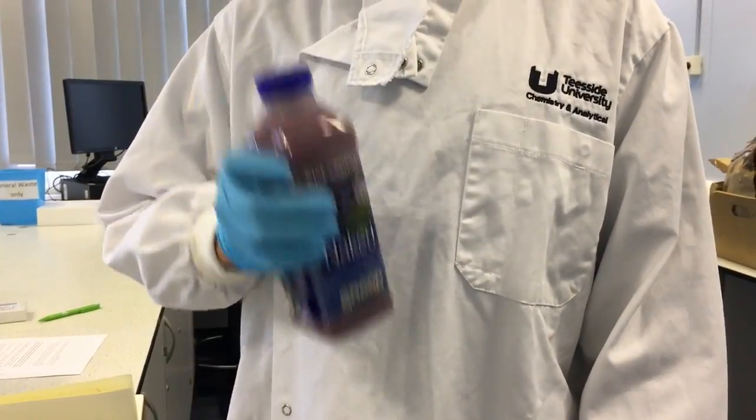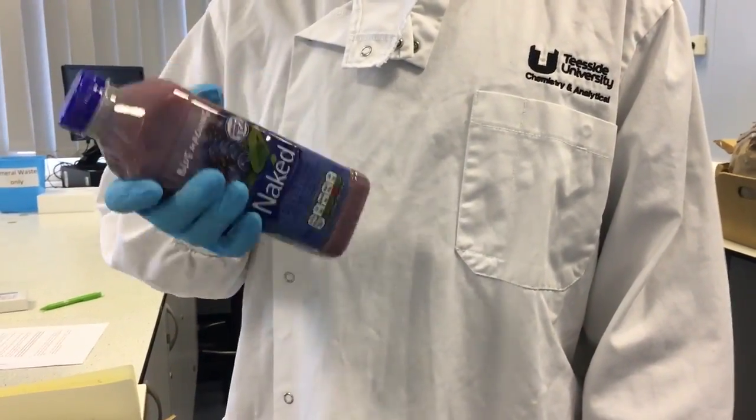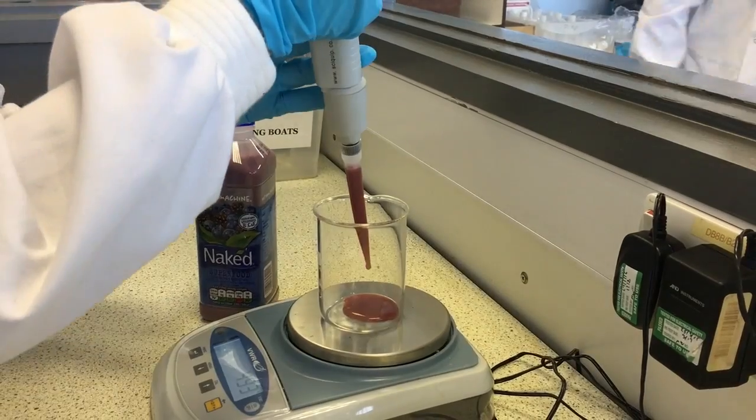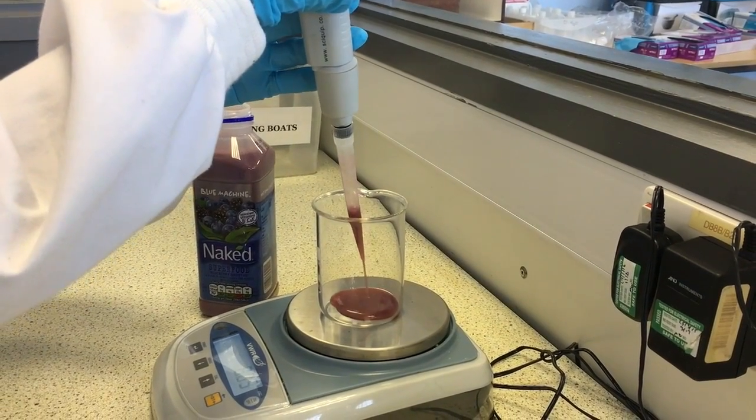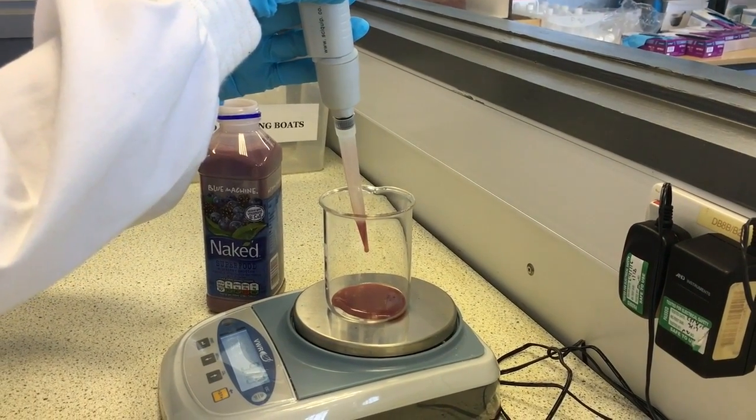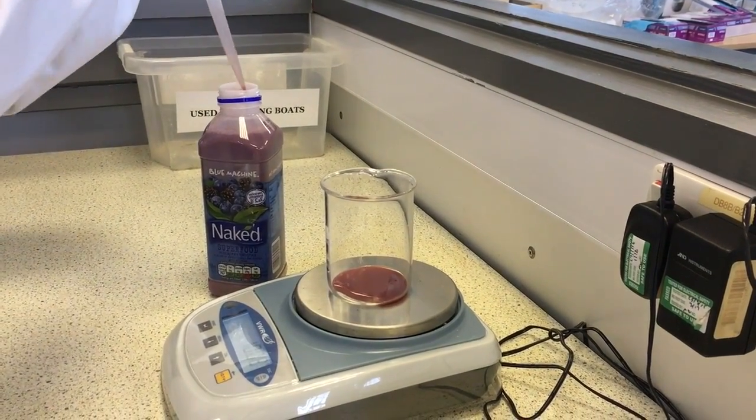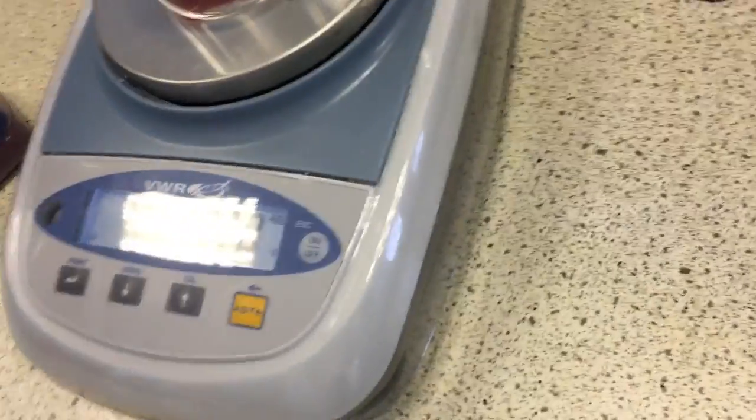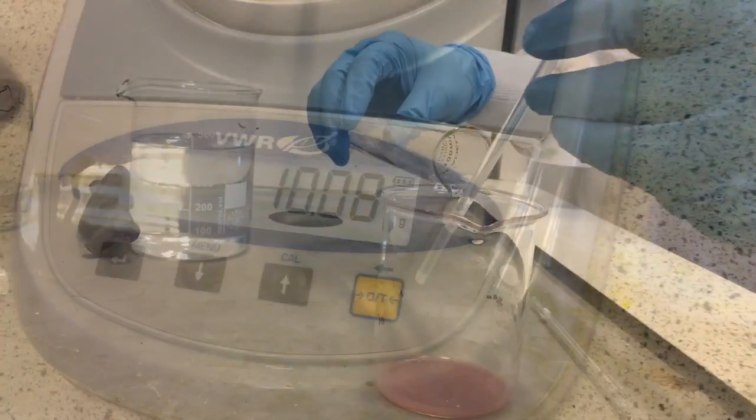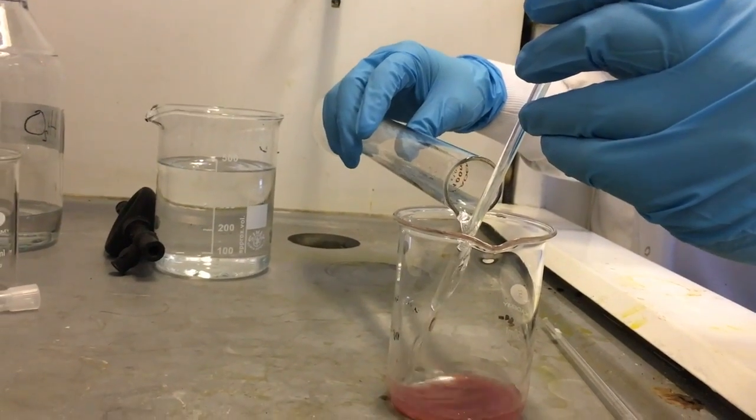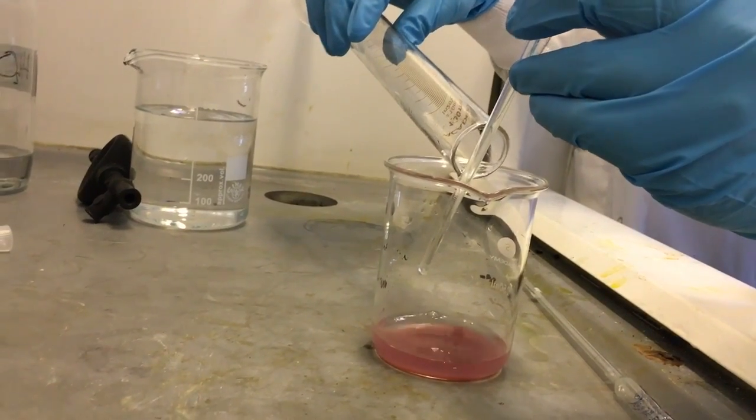We shook the smoothies to ensure there's an even distribution of particles. Next, we weighed approximately 10 grams of our sample. Getting a weighted measure gives us a more accurate measurement than using only a pipette to measure volume. Then we added 20 milliliters of the extraction solvent into the smoothie sample.